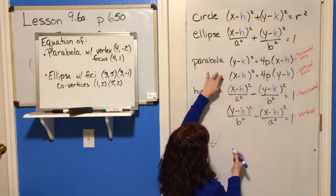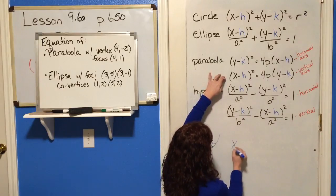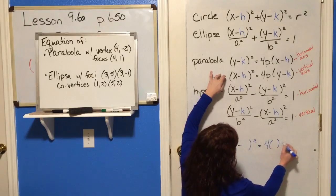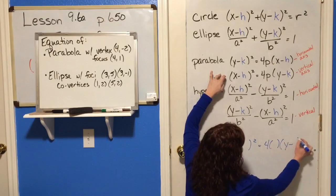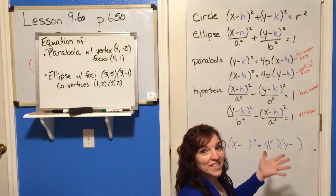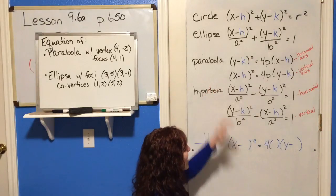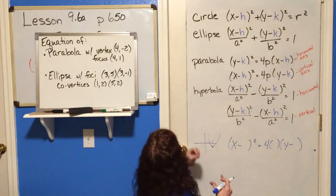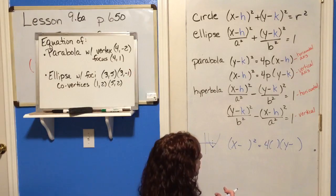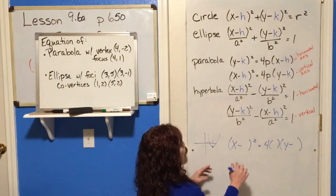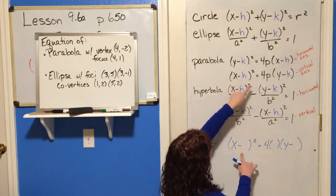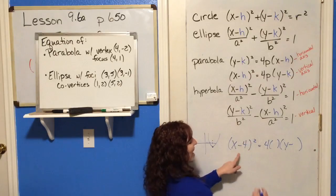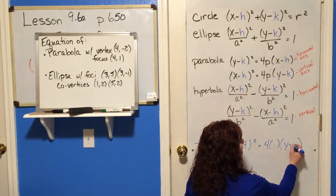If it's got a vertical axis, we use this format: X minus H squared equals 4P times Y minus K. Start with the skeleton, then fill in what you know. The vertex is 4, negative 2, so H is 4 and K is negative 2 — and remember, minus a negative gives plus 2.